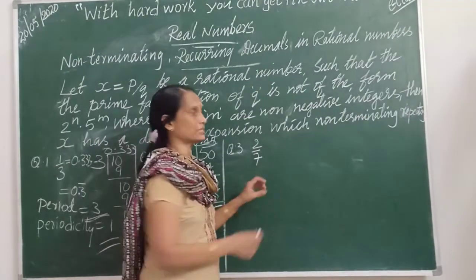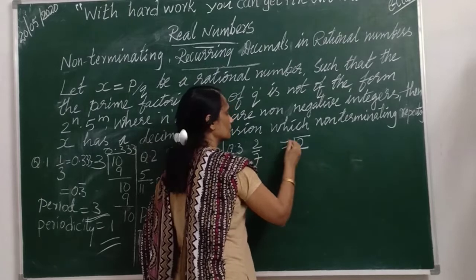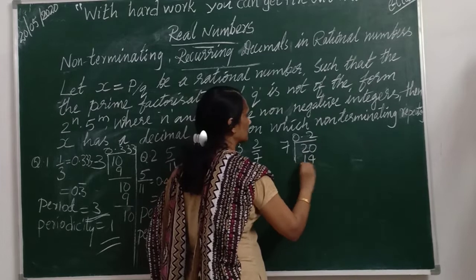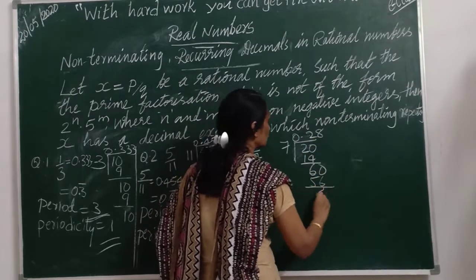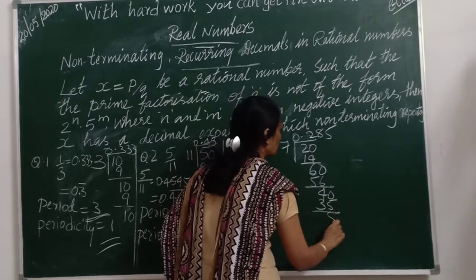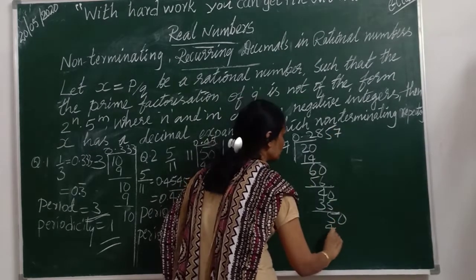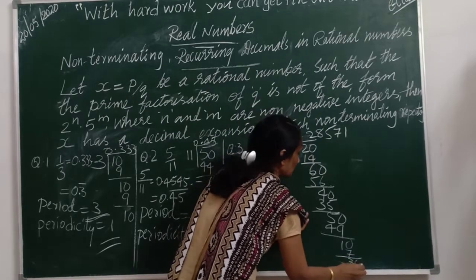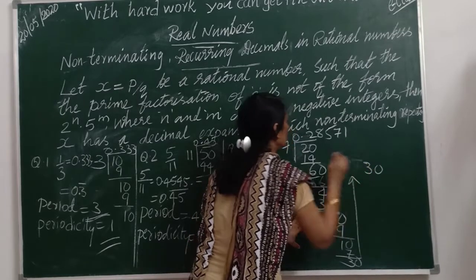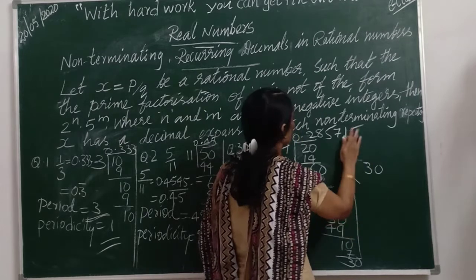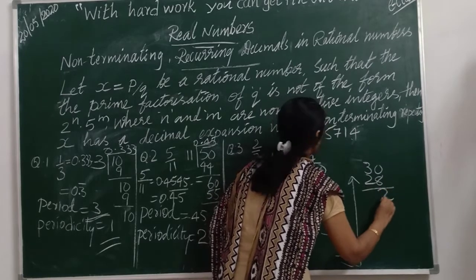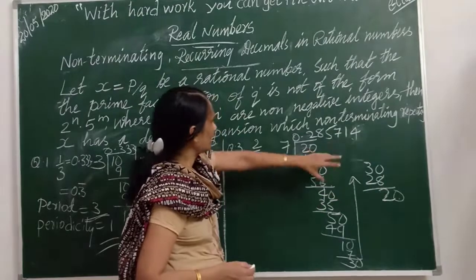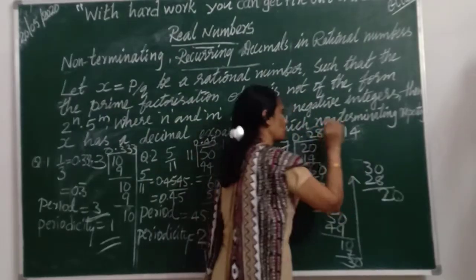Let us see the next number: 2 by 7. Performing the long division, we get 0.285714... After going through the division steps, we again reach the first dividend 2. When we reach the first dividend again, it is certain that the same digits will keep repeating after this.